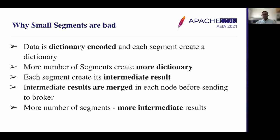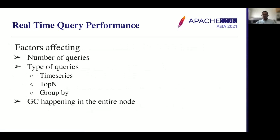The intermediate result from each segment is later combined and sent to the broker. This merge is done by one thread. If segments are smaller and larger in number, there will be more intermediate results, and the historical process will take more time to merge them, leading to higher latency or slower query performance. In some use cases requiring near-real-time queries, this causes high CPU usage on the real-time node.